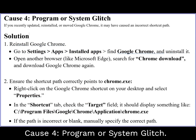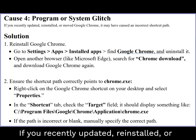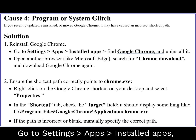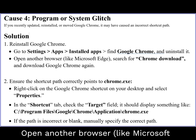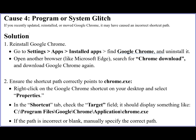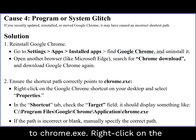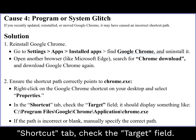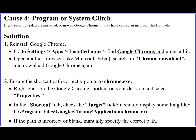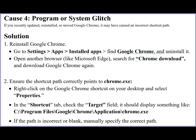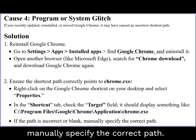Cause 4: Program or system glitch. If you recently updated, reinstalled, or moved Google Chrome, it may have caused an incorrect shortcut path. Solution 1: Reinstall Google Chrome — go to Settings, Apps, Installed Apps, find Google Chrome, and uninstall it. Open another browser like Microsoft Edge, search for Chrome Download, and download Google Chrome again. Solution 2: Ensure the shortcut path correctly points to chrome.exe. Right-click on the Google Chrome shortcut on your desktop and select Properties. In the Shortcut tab, check the Target field — it should display something like C:\Program Files\Google\Chrome\Application\chrome.exe. If the path is incorrect or blank, manually specify the correct path.